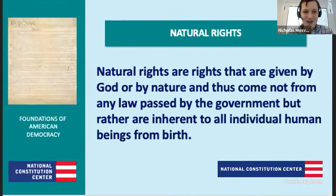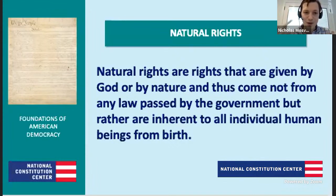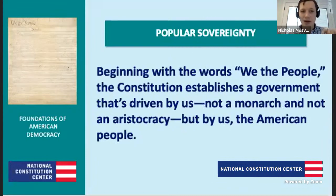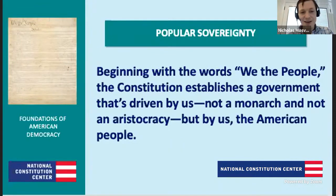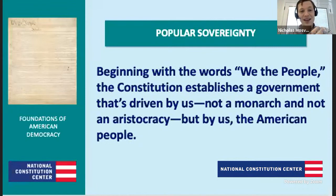Why that matters for rule of law and popular sovereignty is that it also relates to the powers that government gets. Popular sovereignty — that's 'We the People' — is the idea that the people themselves are the ultimate source of political power, not monarchy or autocracy or aristocracy. The people take their natural rights, enter political society, and create a social contract in which they give away some rights to the government in exchange for protection and the benefits of political society.